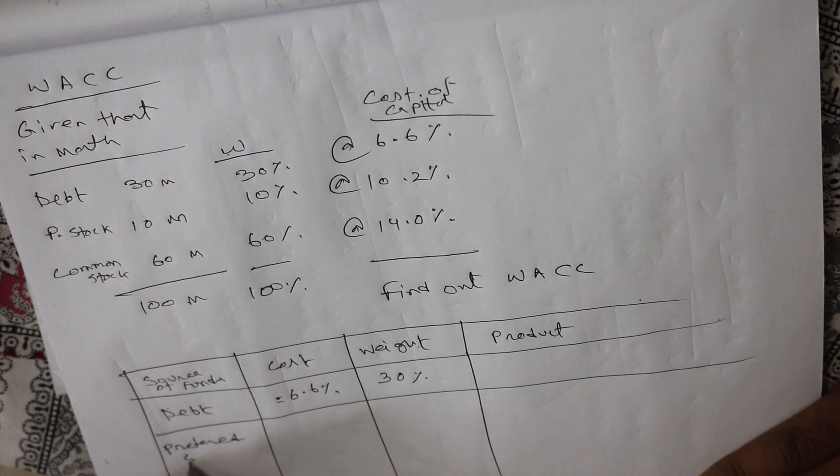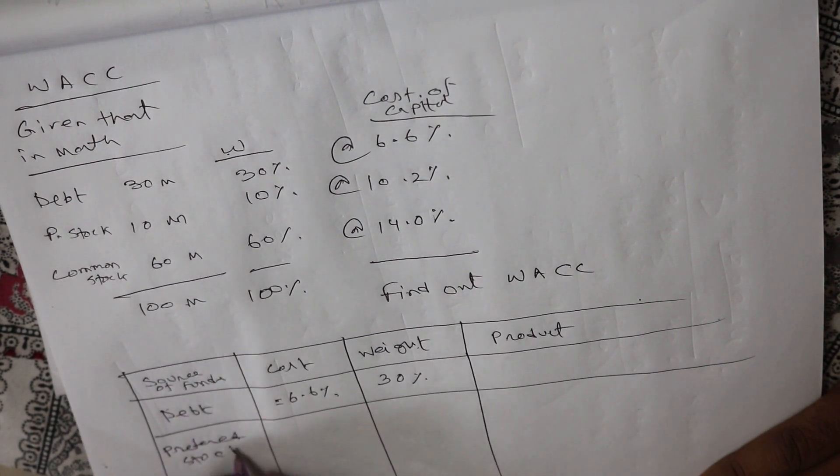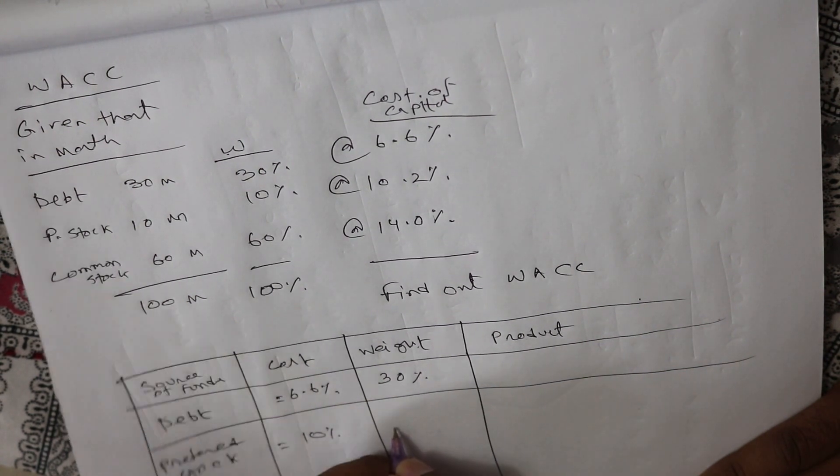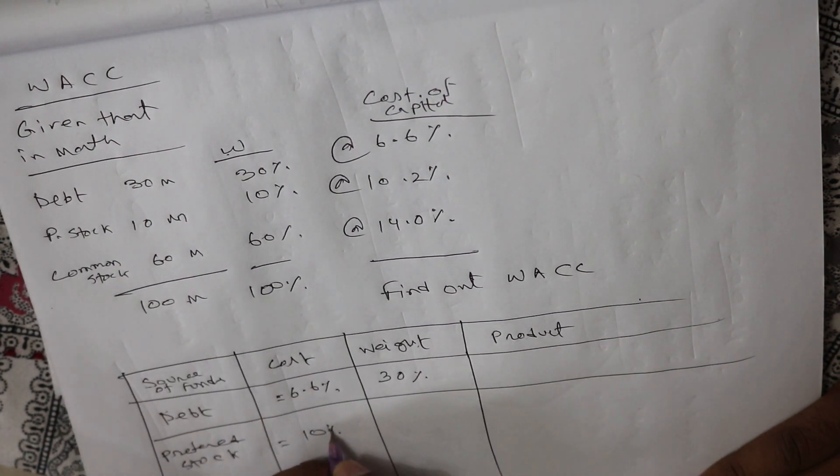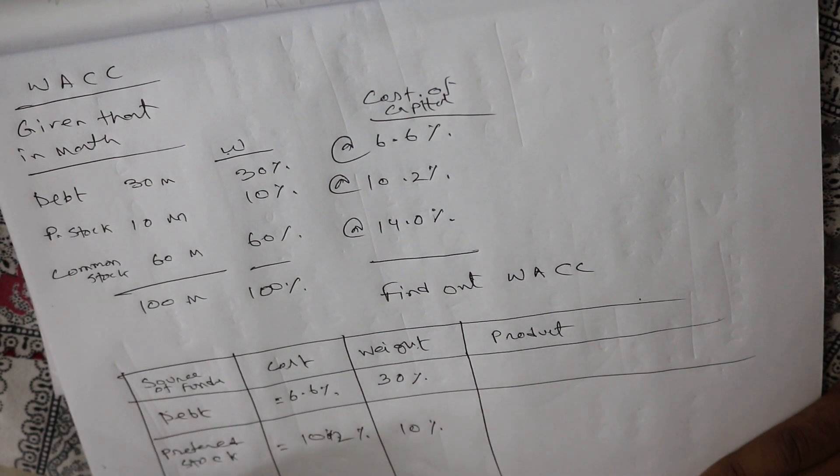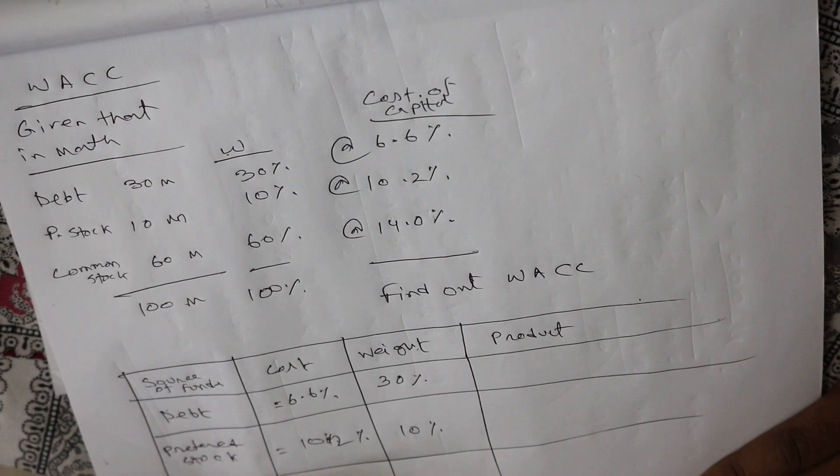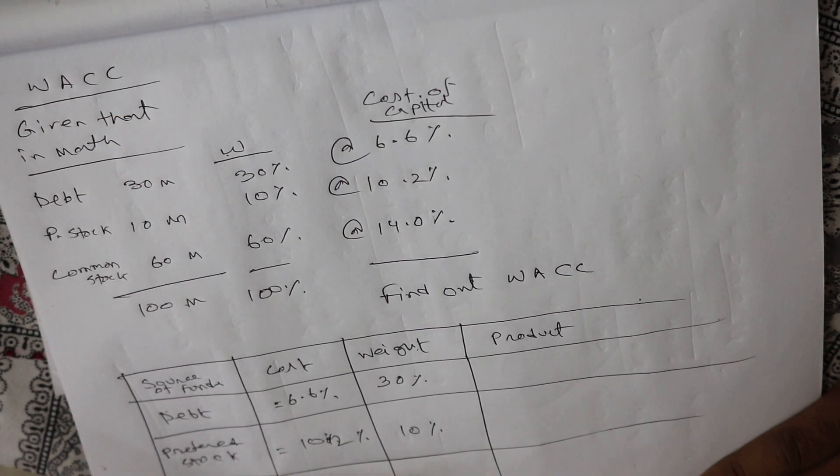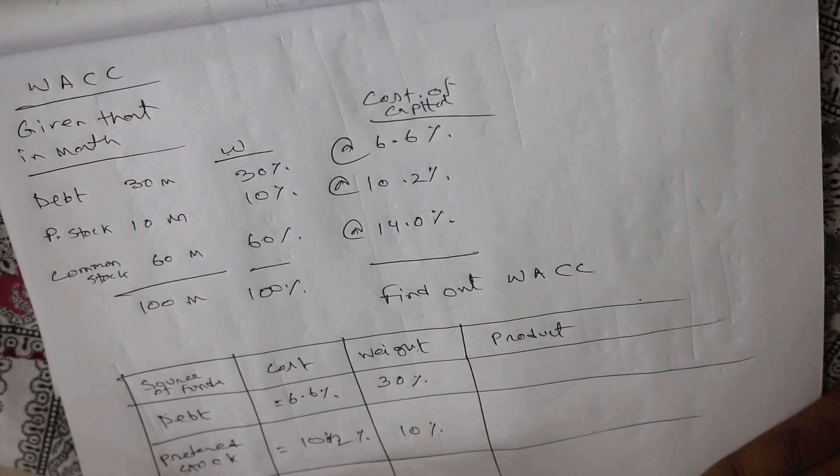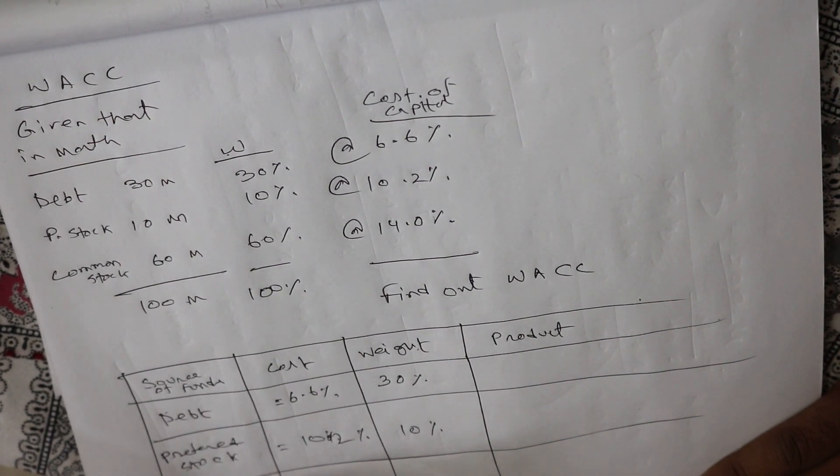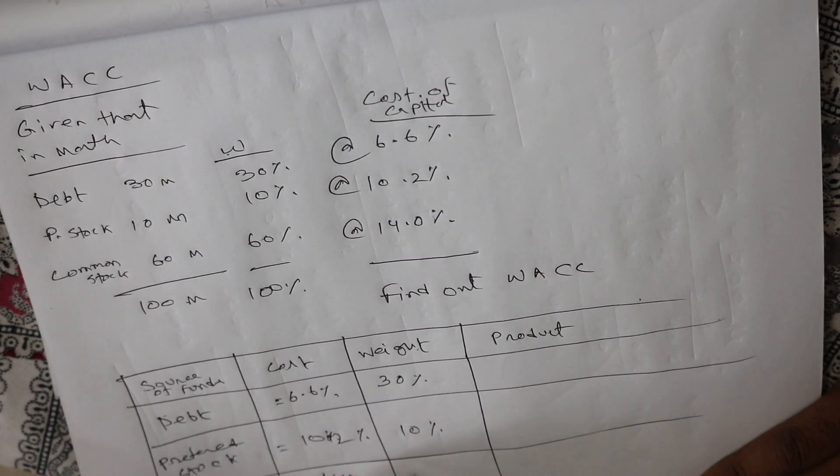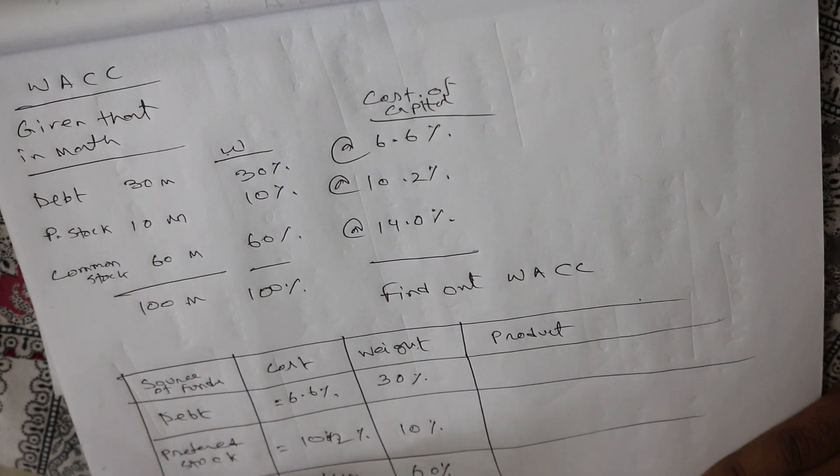Preferred stock cost 10.2% and weight is 10%. And finally, common stock cost 14%, ratio 60%.